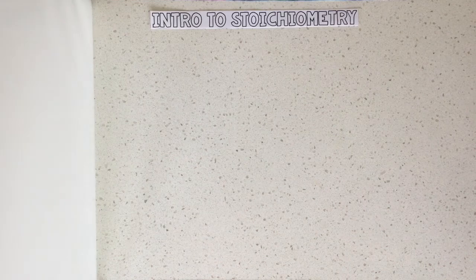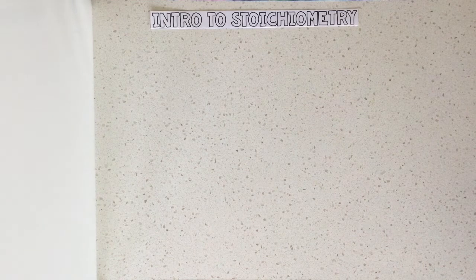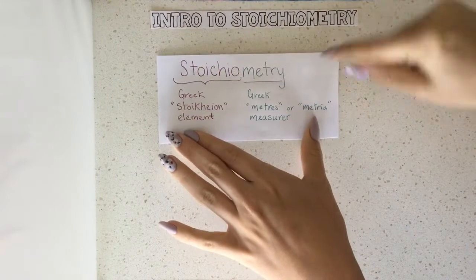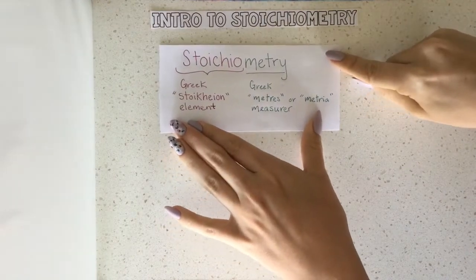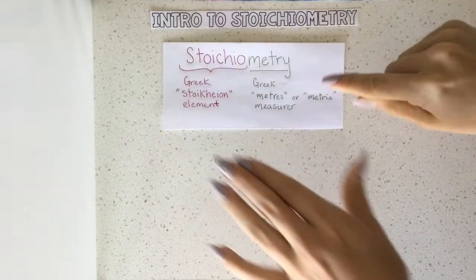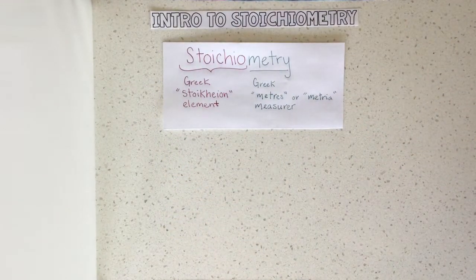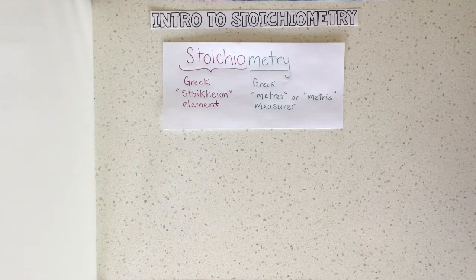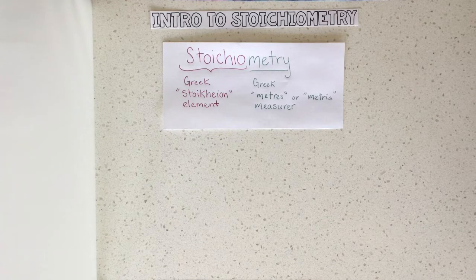We're going to start a new unit called stoichiometry — one of the hardest words to spell in chemistry, but with a very simple meaning. Stoichiometry comes from two Greek words: stoikion means element, and metri comes from a Greek word meaning measure. So all we're doing is measuring elements, and you've actually done stoichiometry before, just not with elements.